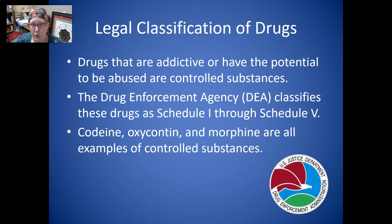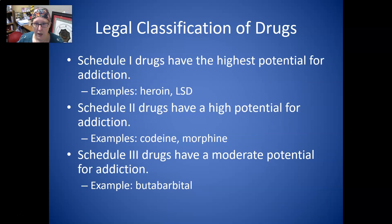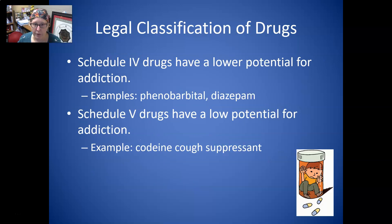Drugs that are addictive or have the potential to be abused are controlled substances. The Drug Enforcement Agency (DEA) classifies these drugs as Schedule 1 through Schedule 5. Schedule 1 drugs have the highest potential for addiction — examples are heroin and LSD. Schedule 2 drugs have a high potential for addiction — examples are codeine and morphine. Schedule 3 drugs have a moderate potential — example is butabarbital. Schedule 4 drugs have a lower potential, such as phenobarbital and diazepam. Schedule 5 drugs have a low potential for addiction, such as codeine cough suppressant.